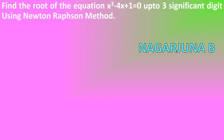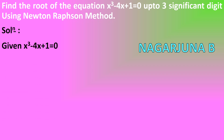Let's find the root of the equation x³ − 4x + 1 = 0, up to 3 significant digits using the Newton-Raphson method. The solution: given x³ − 4x + 1 = 0. As described in the procedure, the given equation has to be considered as f(x). Therefore, let f(x) = x³ − 4x + 1.